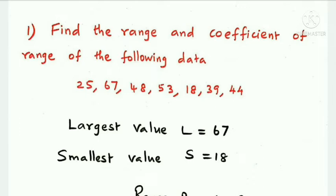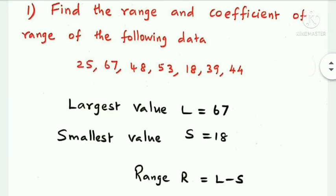For the given data, the largest value is 67 and the smallest value is 18. So L equals 67 and S equals 18. The range formula is: Range R equals largest value minus smallest value, that is L minus S.